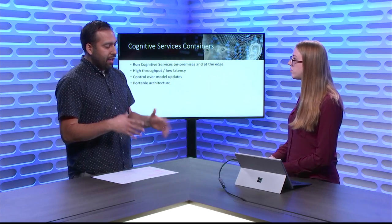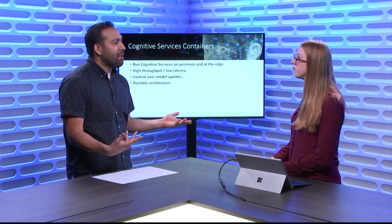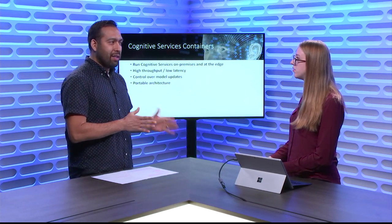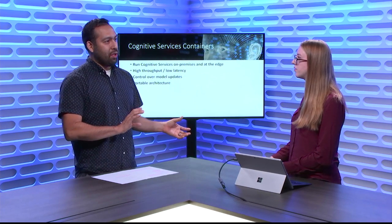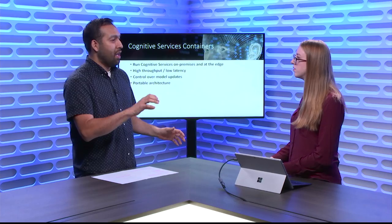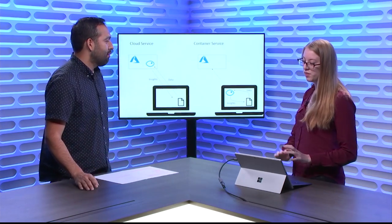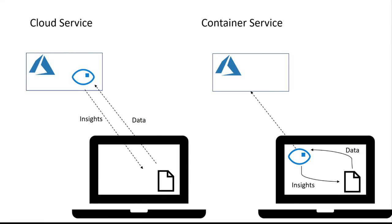Are they really the same service — the one running in the cloud and the container version? It's the same service. You use the same keys, the same code you wrote to call it and analyze the results. The only difference is how it's deployed. With the cloud service, you send your data over the network, it processes it, deletes the data, and sends usage data to the back end. When deployed locally, it's the exact same service — you send data locally, and we just send usage back to Azure.